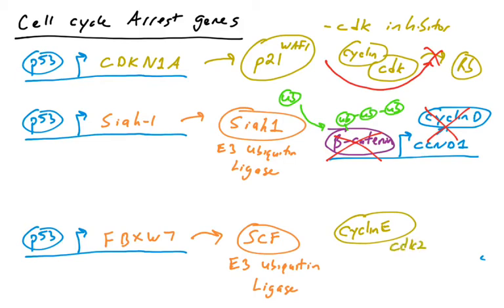So if you recall, cyclin E binds CDK2, allowing CDK2 to phosphorylate RB, which helps progress the cell through S phase. So SCF will ubiquitinate cyclin E and destroy it. So again, p53 is able to affect the cell cycle by targeting cyclin E for destruction through production of FBXW7, which contributes to this ubiquitin ligase SCF. So these are three examples of how p53 can influence the cell cycle. There are many more examples. Those are the three I'm going to give you. So that's cell cycle arrest.